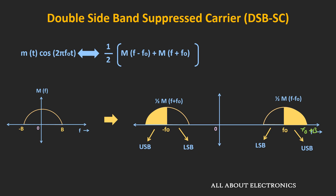In this type of modulation, there is no discrete component at frequency f₀. Because if such a frequency component were present, it would be represented by a delta function or impulse function at f₀. Since both upper and lower sidebands are transmitted and there is no discrete carrier frequency at f₀, this carrier modulation is known as double sideband suppressed carrier.